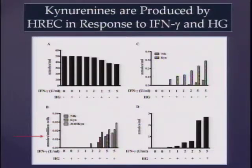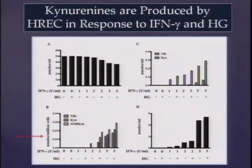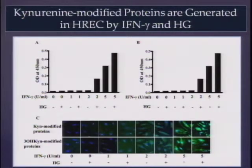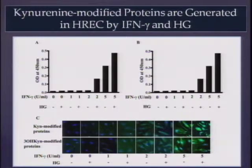He also looked at kynurenines, the products of IDO. In cells, measured in nanomoles per million cells, all products of tryptophan metabolism are increased, and with high glucose in addition to interferon gamma, you have an additive effect — more kynurenines in endothelial cells. We have developed two monoclonal antibodies that recognize specifically these modified proteins, and used them to show that interferon gamma addition to HREC causes kynurenines binding to cytosolic proteins, enhanced in the presence of high glucose.